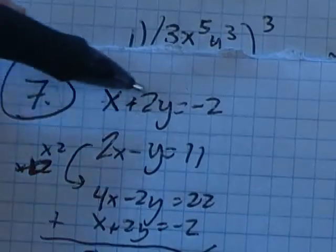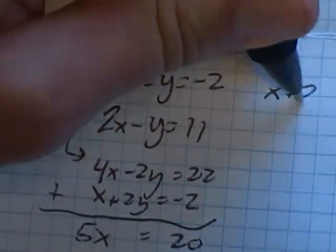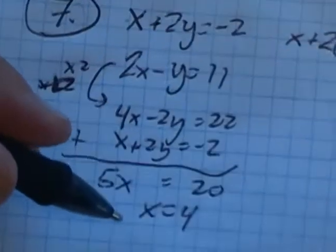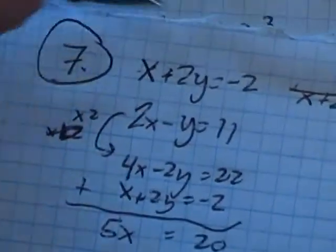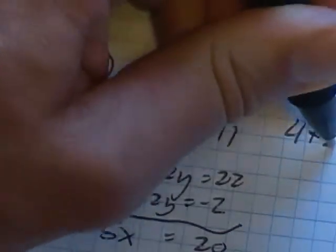So let me do that. I think I'll just plug it into this top equation: x plus two times y. Whoops, it's x that I know, x is four. So four plus two times y equals negative two.